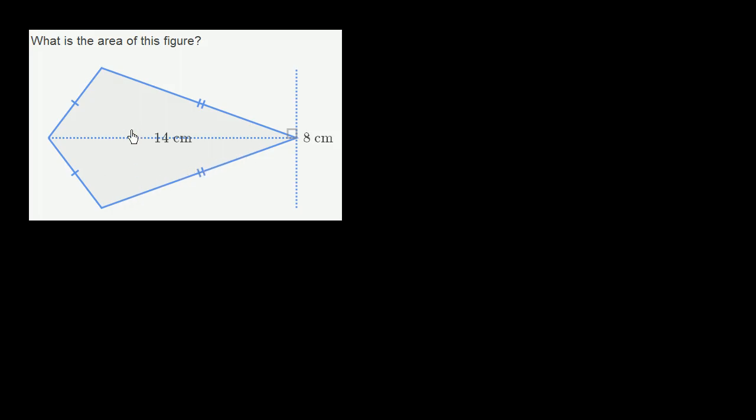To think about how we might find the area, given that we've been given the width of this kite and also the height—or if you view this as a sideways kite, you could view this as the height and the 8 centimeters as the width—given these dimensions, how can we actually figure out its area?